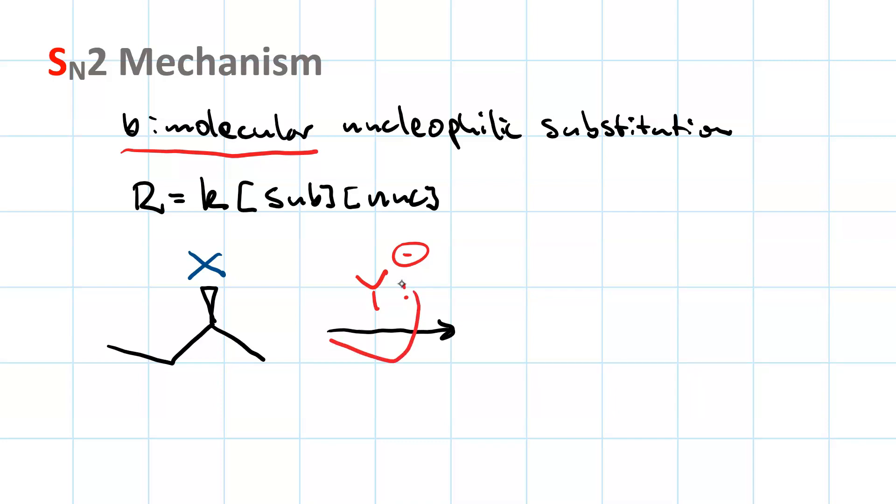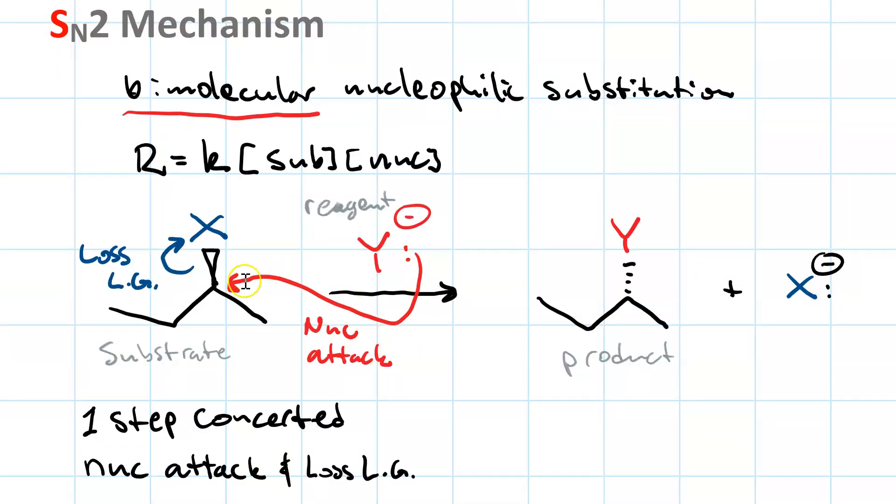I have concerted nucleophilic attack and loss of a leaving group in the same step. My nucleophile performs backside attack, my leaving group leaves, and I get my product. Notice the bond that was a wedge in the substrate is now a dash in the product. This is called inversion of configuration, and that's because we do backside attack. And here's the leaving group, and we've substituted Y for X.